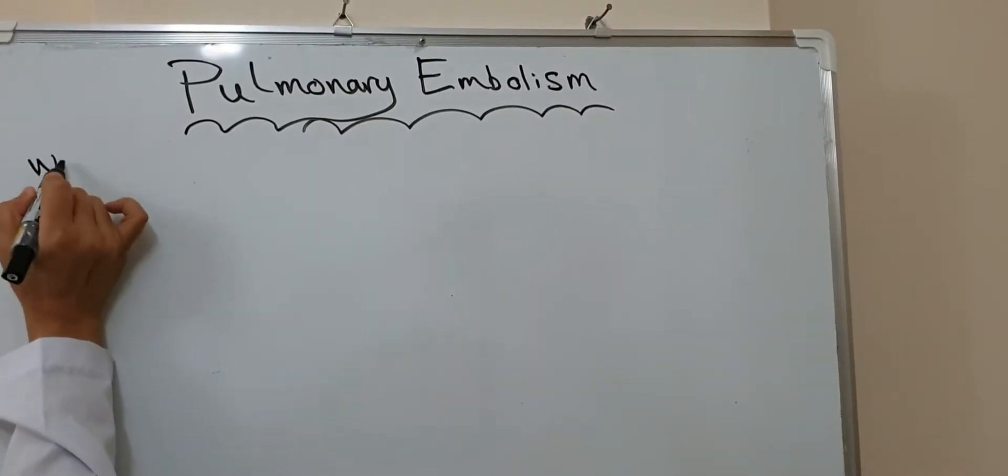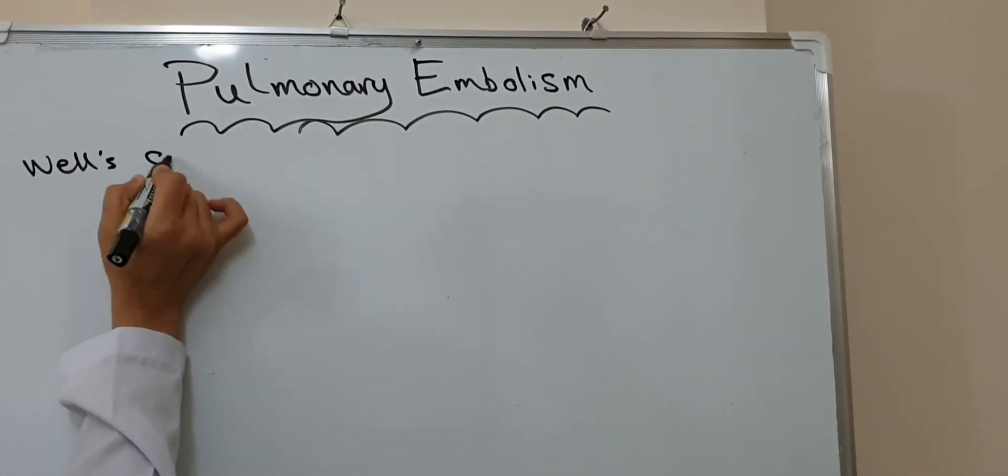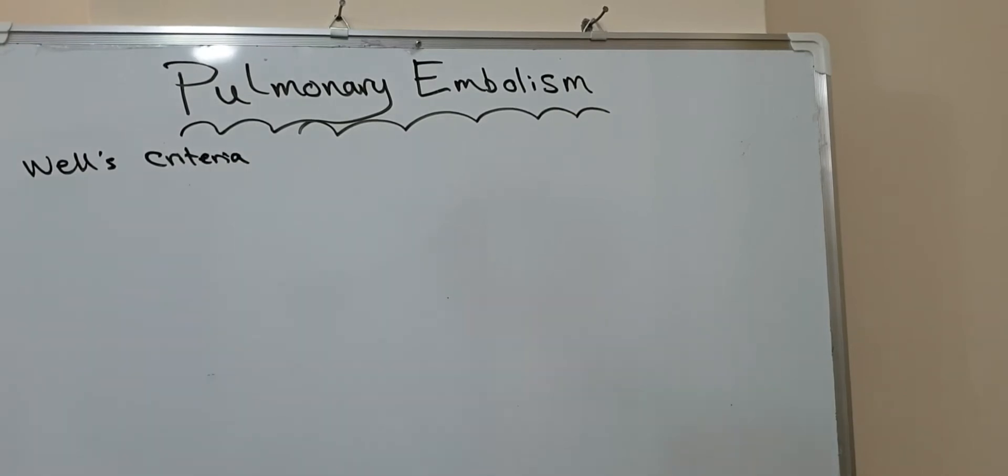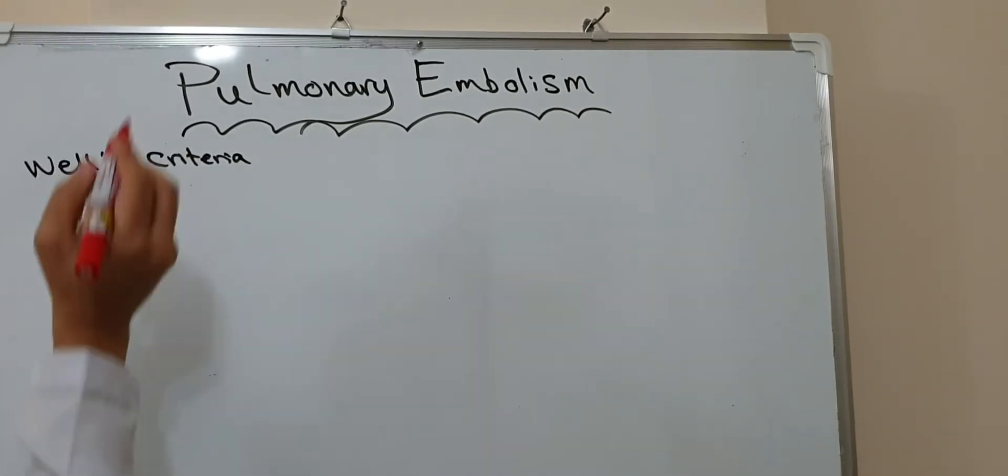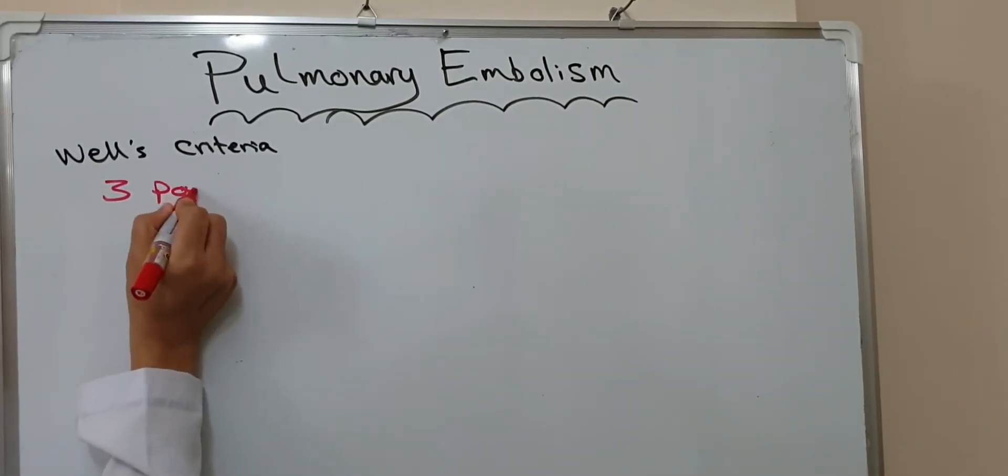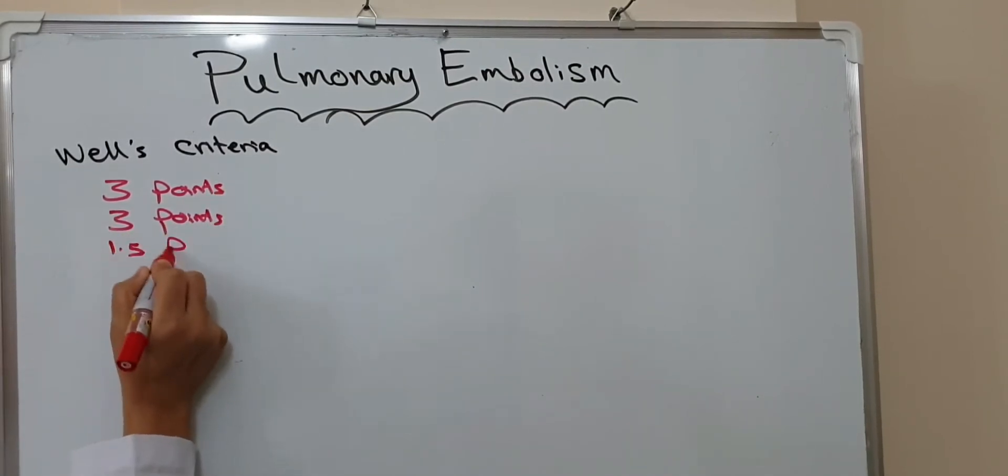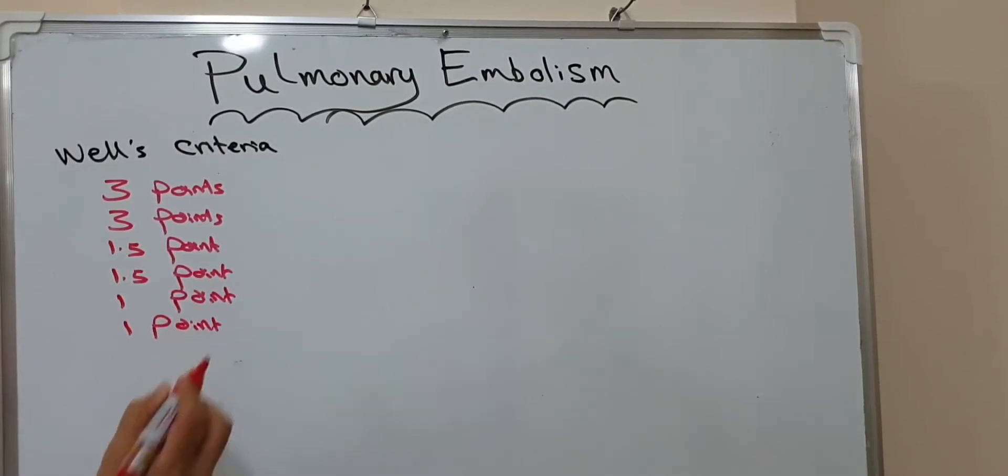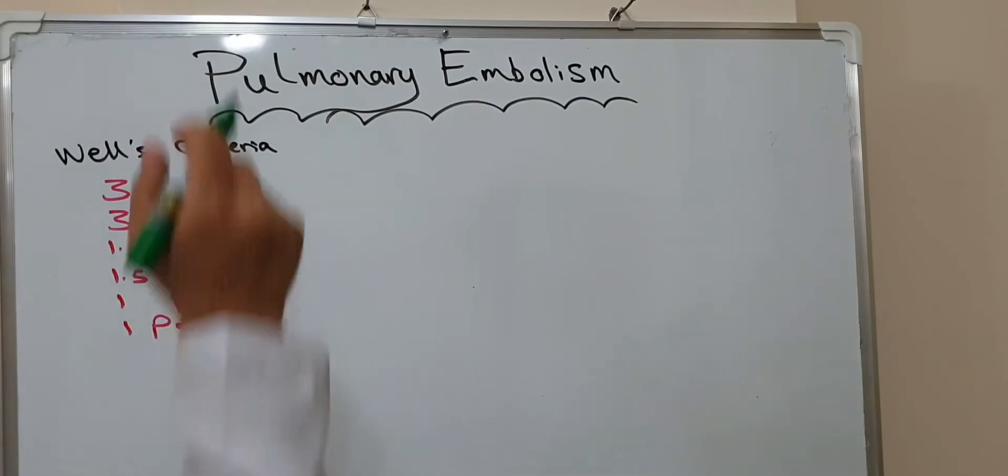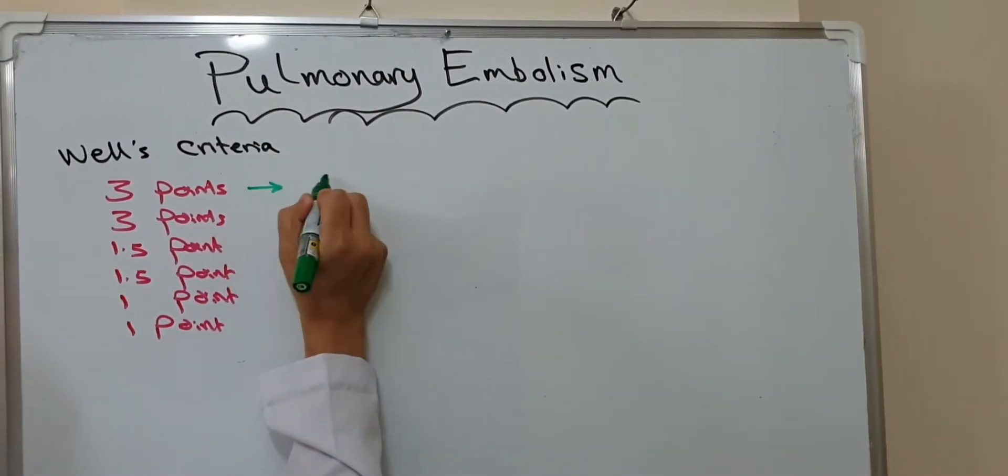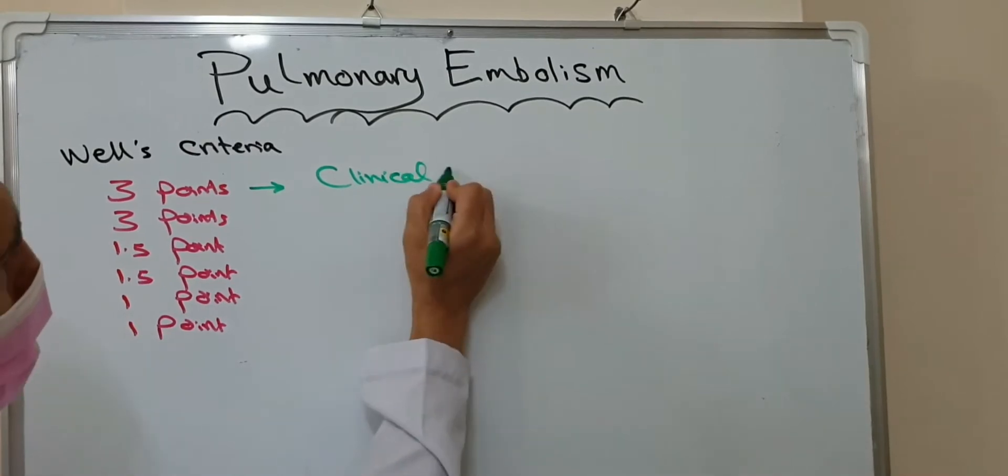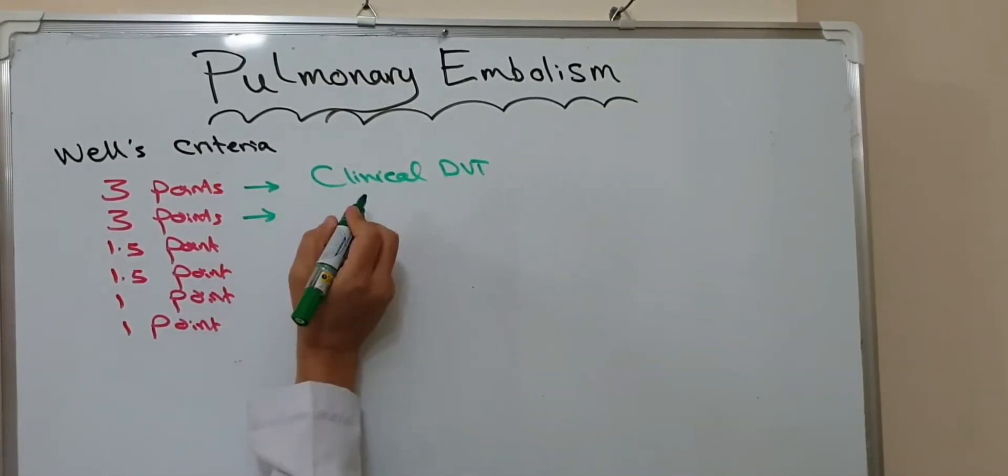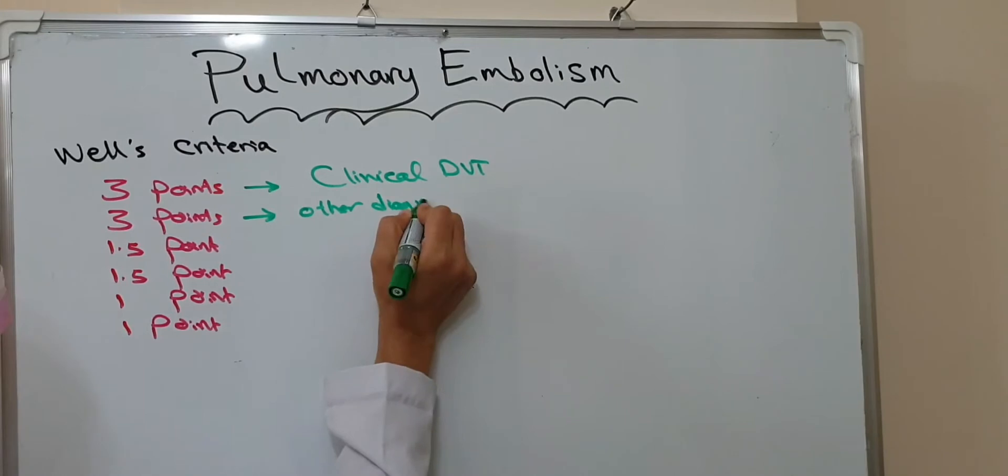Hello everyone, today we are going to speak about pulmonary embolism. First, we'll discuss the Wells criteria. These criteria include points based on patient history and physical examination. According to these criteria, we can classify pulmonary embolism into two categories and decide the type of management for the patient.